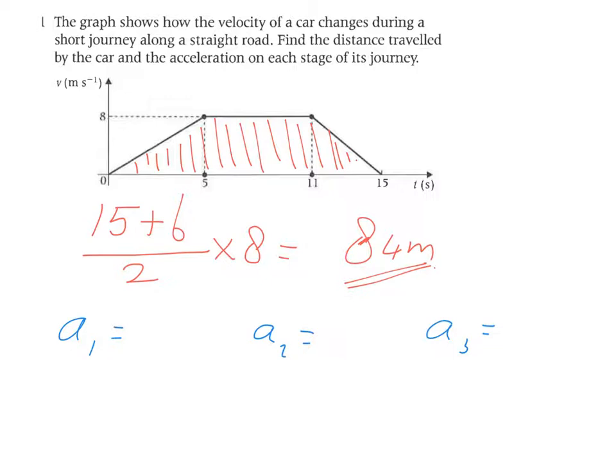So the first one goes from 0 to 8 for the velocity. How do you calculate acceleration? It is the change in speed over the time taken. It's basically the gradient of your line. If you have a velocity-time graph, the gradient is going to give you the acceleration.